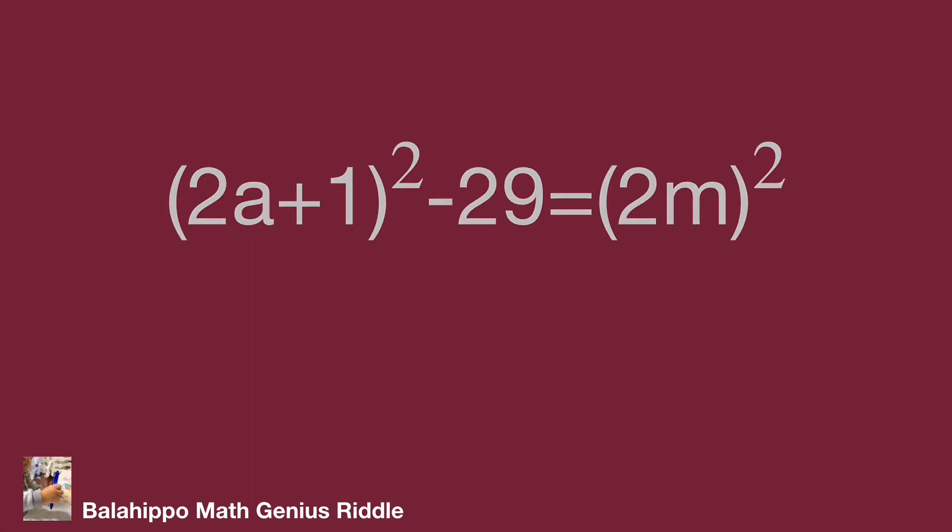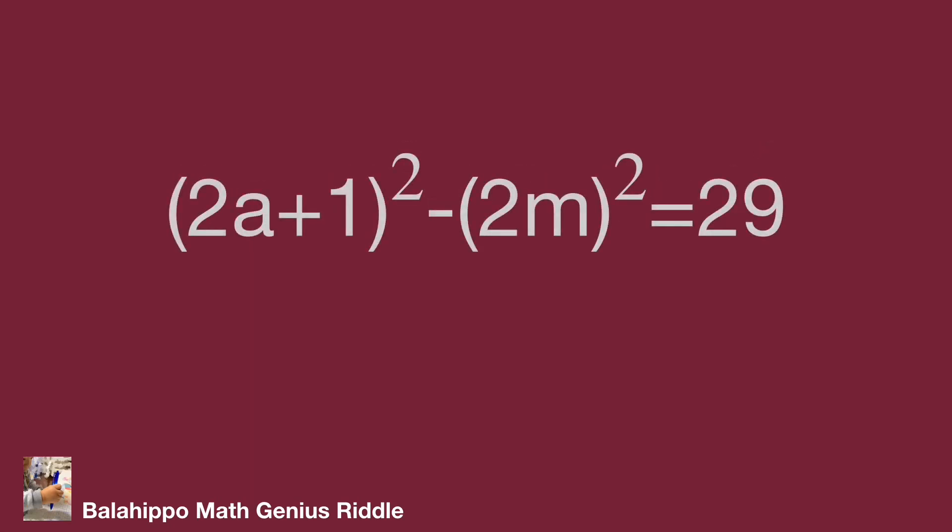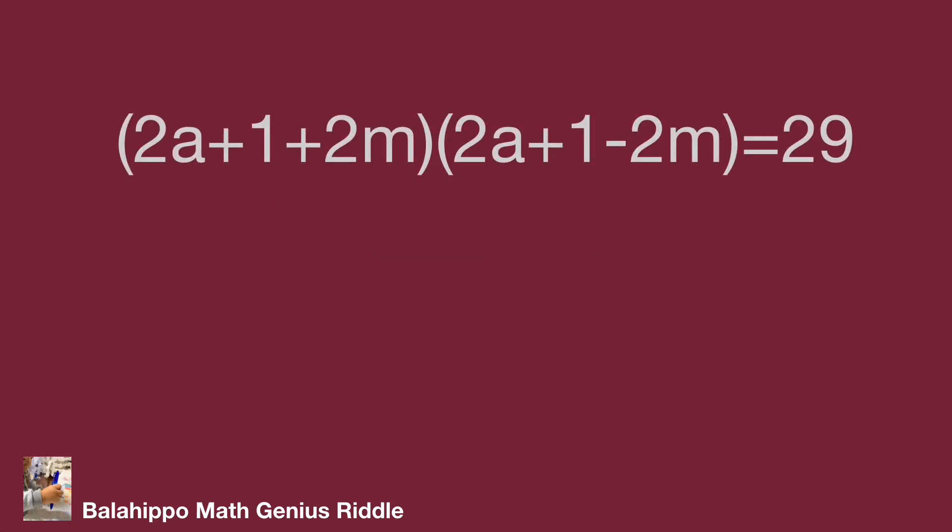Move the items as quantity 2a plus 1 squared minus quantity 2m squared equals 29. Then utilize the formula for a squared minus b squared equals quantity a plus b multiply quantity a minus b. For this equation, get quantity 2a plus 1 plus 2m multiply quantity 2a plus 1 minus 2m equals 29.